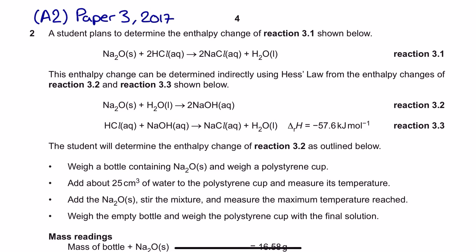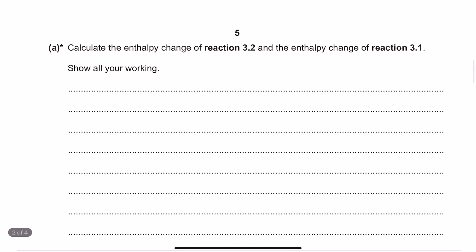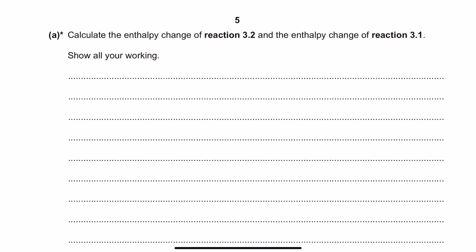For this particular exam question you're given three different reactions. We've got 3.1 through to 3.3 and we're being asked to calculate the enthalpy change of reaction 3.2 and the enthalpy change of reaction 3.1 and to show all the working.